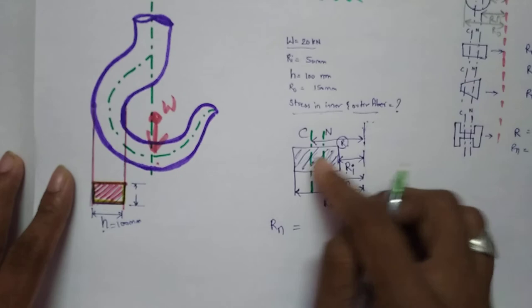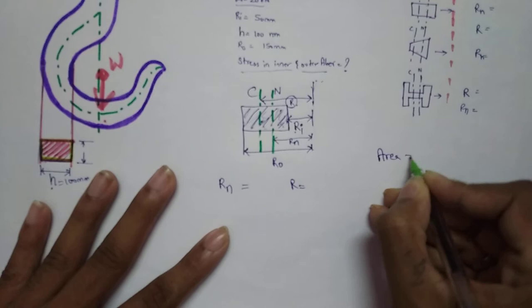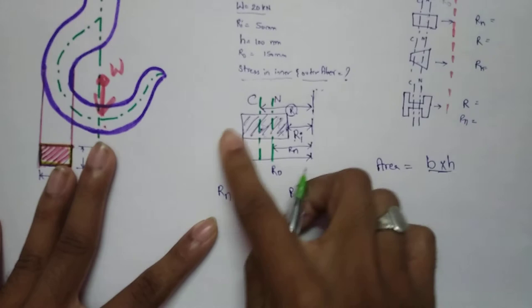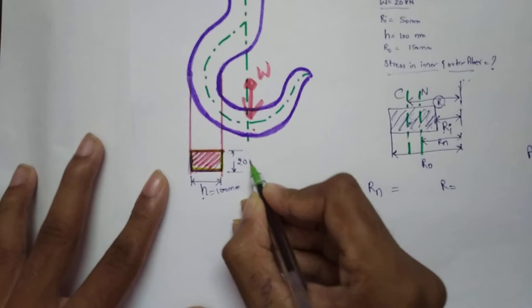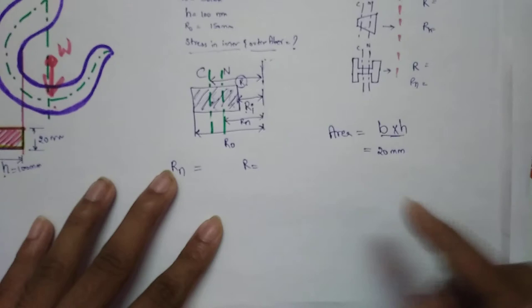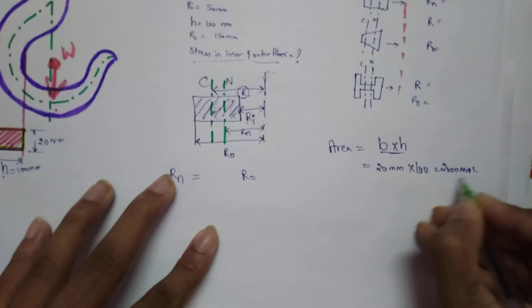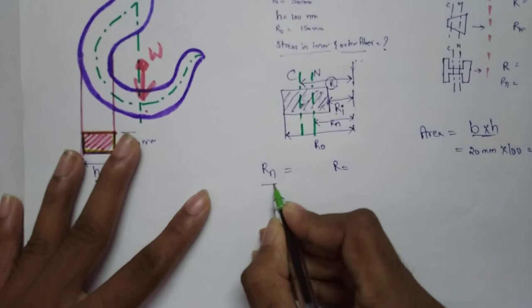First of all we need to find the area of this cross section, which is breadth into height. We know it is rectangular. Given breadth is 20 mm and height is 100 mm, so 20 into 100 gives us 2000 mm² area.